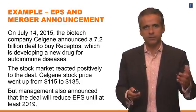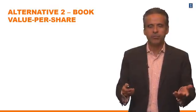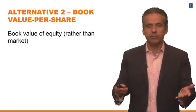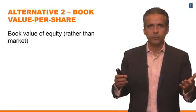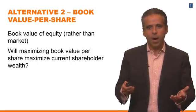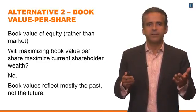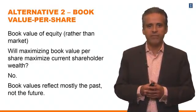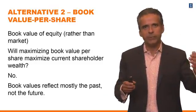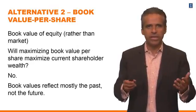That's an example where stock prices and EPS really depart from each other. Another alternative you might think about is book value per share. One advantage is that it's an accounting value that goes through auditing and is easy to verify. But the problem is similar to EPS: the book value of equity does not reflect future profits — it reflects mostly what happened in the past. If we maximize book value of equity, we're completely missing the future, which will lead to short-termism and wrong decisions.